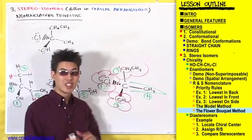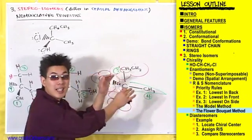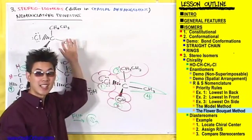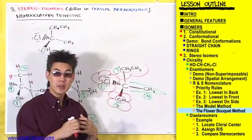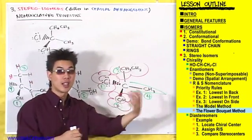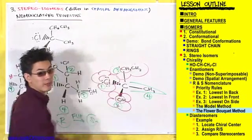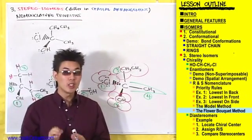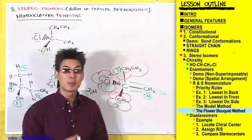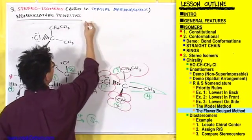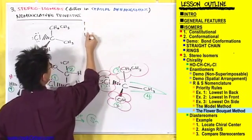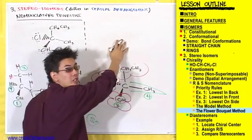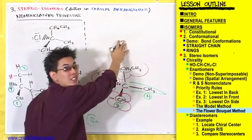I've gone ahead and just drawn out this compound again up here, and this was the S enantiomer. Now let's draw its mirror image, the R enantiomer, right next to it. What you're going to do is draw a little imaginary plane in between these guys. So there's your imaginary plane — here's the S enantiomer, and let's draw the R enantiomer right next to it.